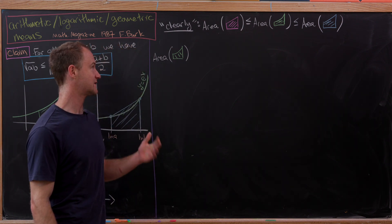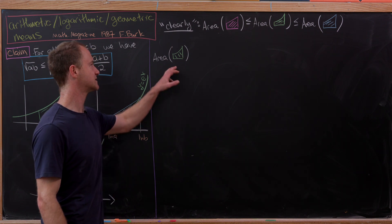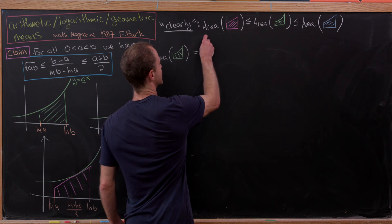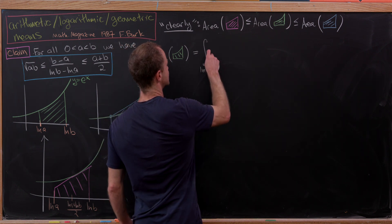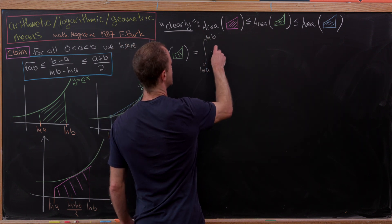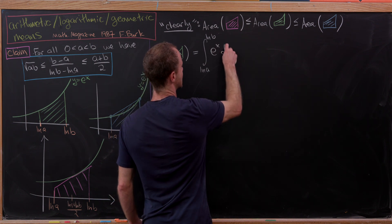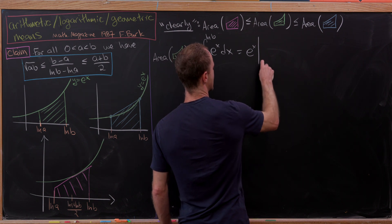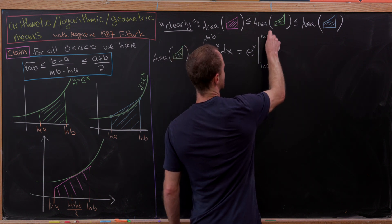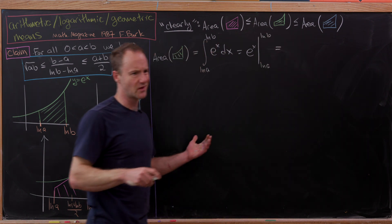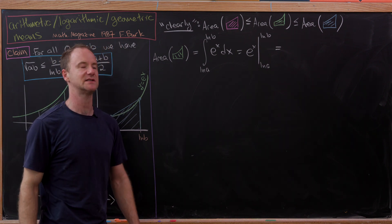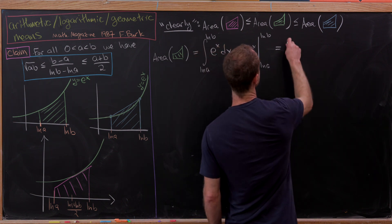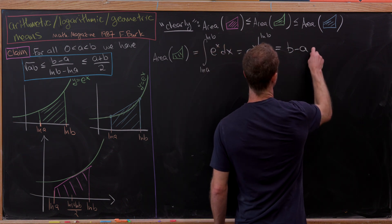Let's start with the area under the curve, which is the easiest. That's simply the integral from ln a to ln b of e to the x dx, which equals e to the x evaluated from ln a to ln b. Since the natural log is the inverse of the exponential function, this simply gives us b minus a.